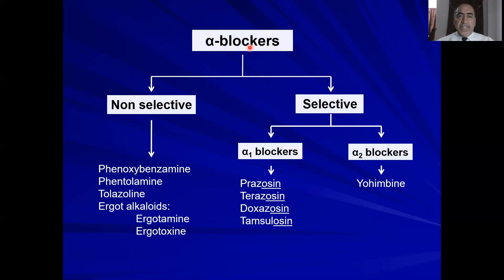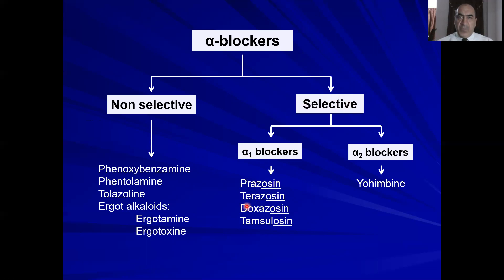The classes of alpha blockers are either non-selective — such as phenoxybenzamine, phentolamine, tolazoline, and ergot alkaloids — or selective. Selective alpha-1 blockers include the prazosin family: prazosin, terazosin, doxazosin, tamsulosin, and others. Alpha-2 blockers include yohimbine.